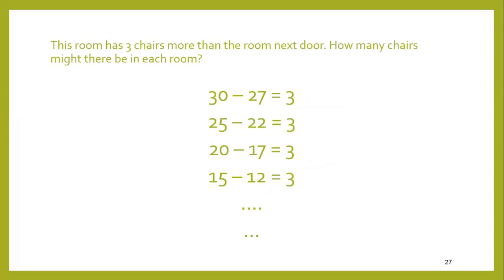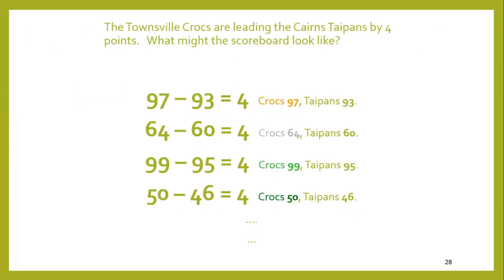This room has 3 chairs more than the room next door — well, there may be 30 here and 27 next door, or 20 here and 17 next door, or 15 here and 12 next door. We could get a different answer from every student in the class. The Townsville Crocs — well, they may have had 97 and the Taipans 93, or 64 and 60, or 99 and 95, or 50 and 46.